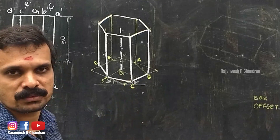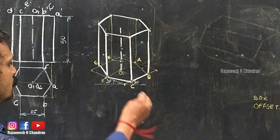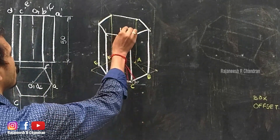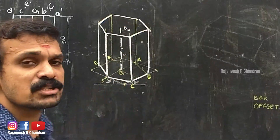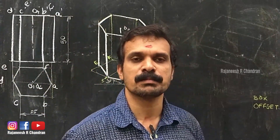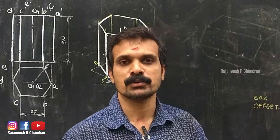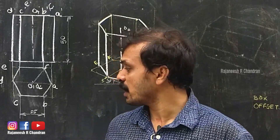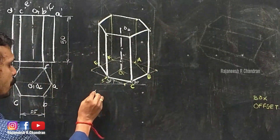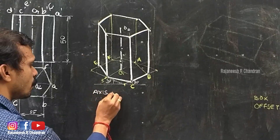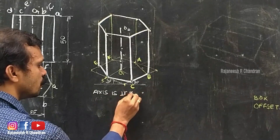This is the isometric view of the hexagonal prism when the axis is perpendicular to the ground. I hope you understood this.